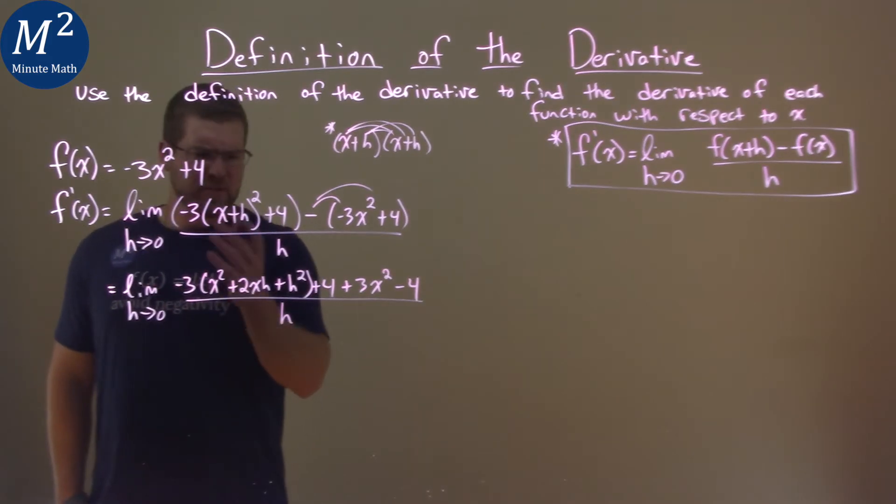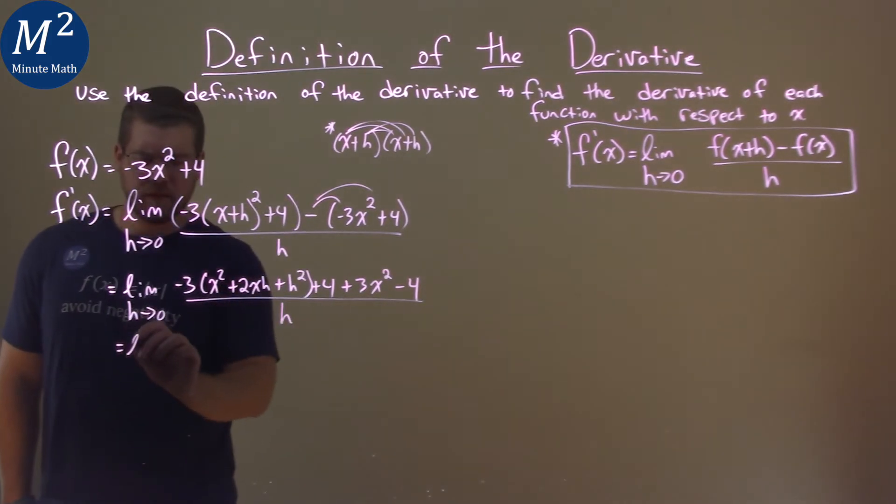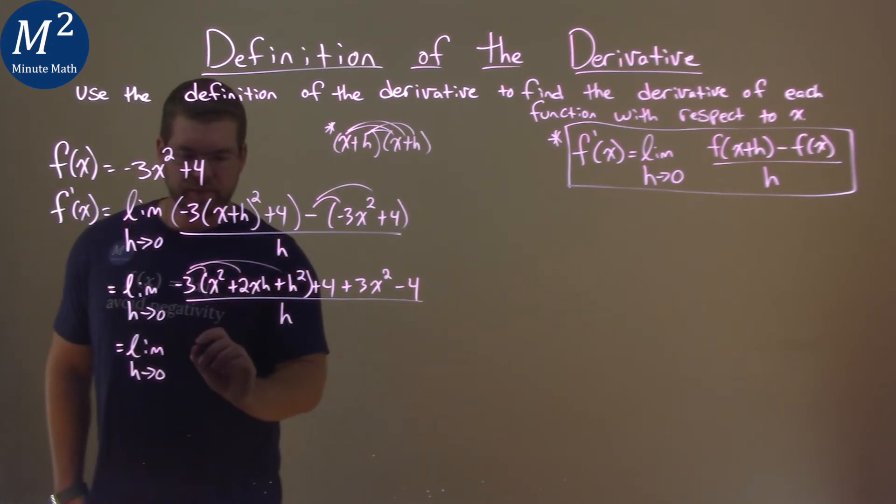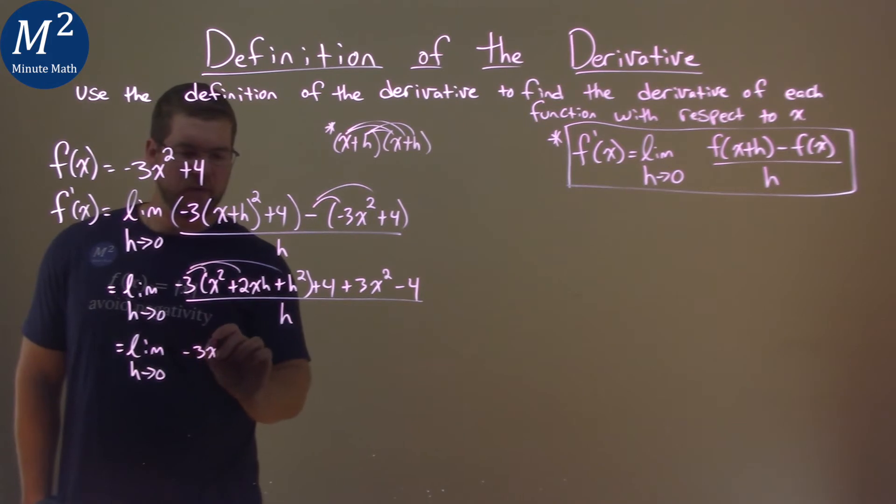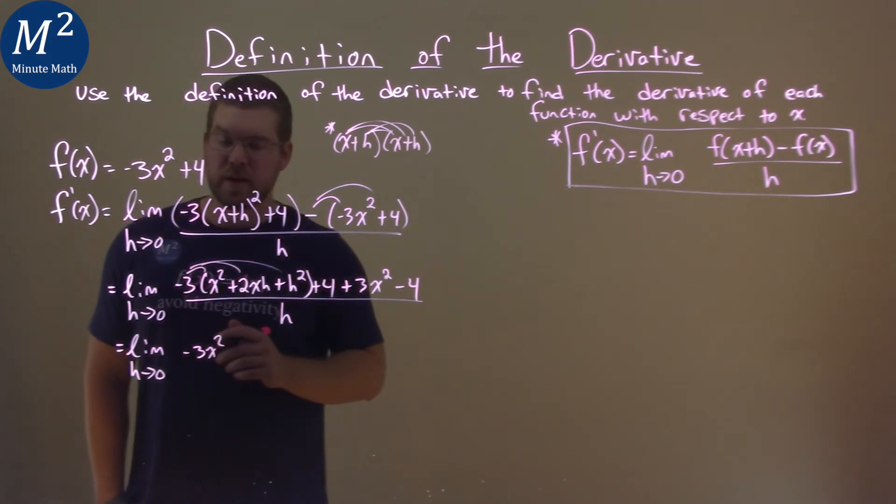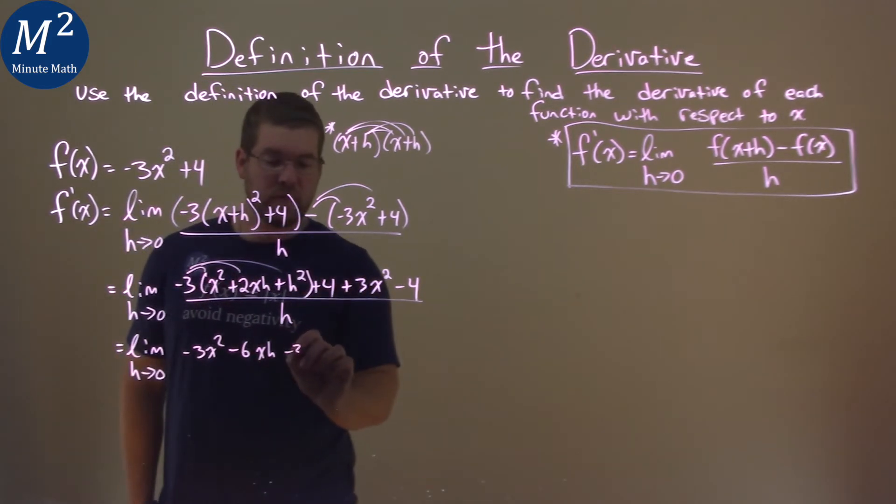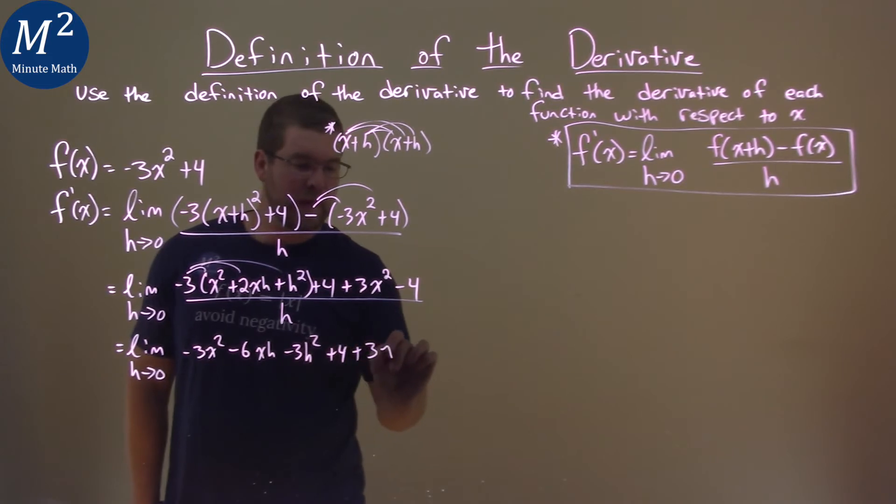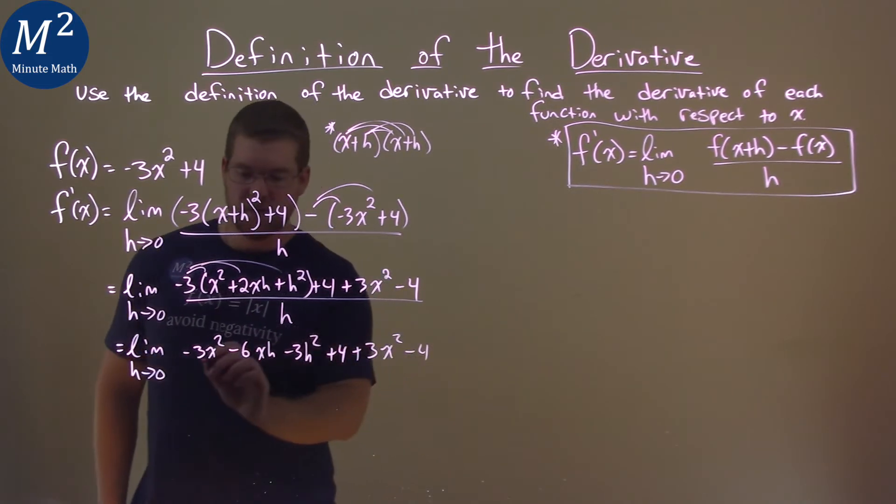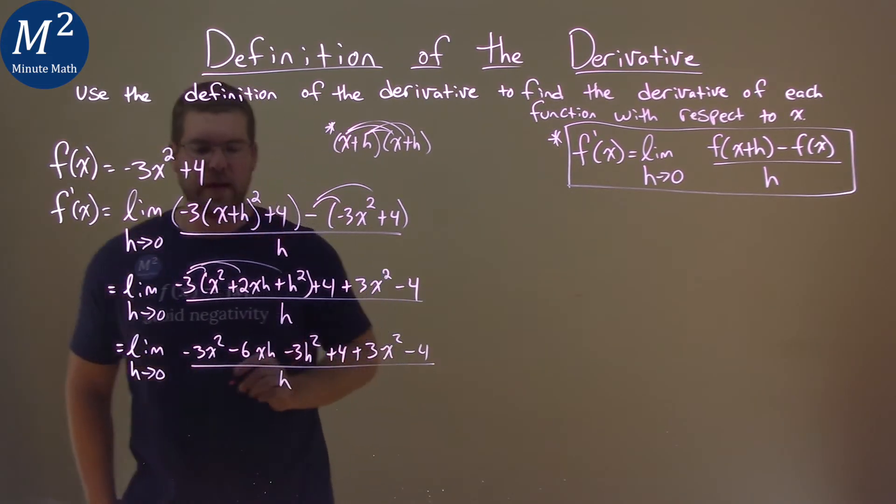Now, again, let's try to simplify where we can here. The limit as h approaches 0. Let's distribute the minus 3 across. So, minus 3 here is minus 3x squared. Minus 3 times 2xh is minus 6xh. Minus 3 h squared is minus 3 h squared. Then we have plus 4 plus 3x squared minus 4 all over the h.